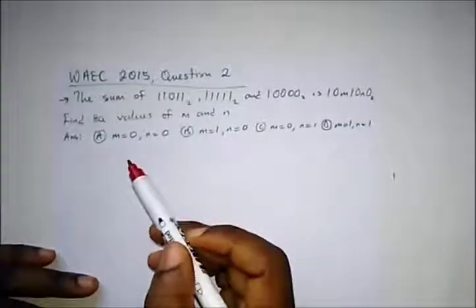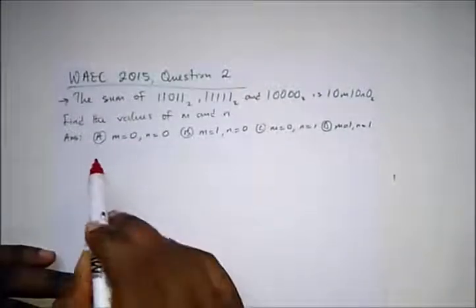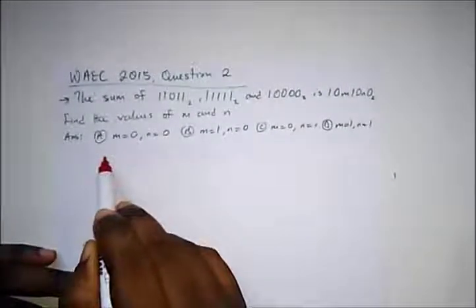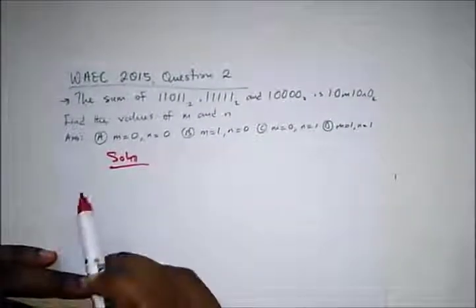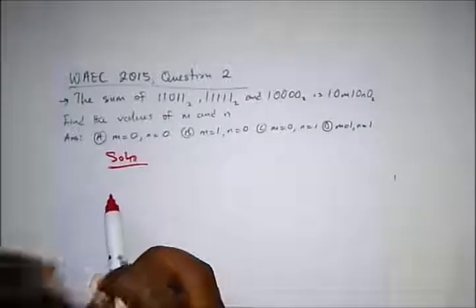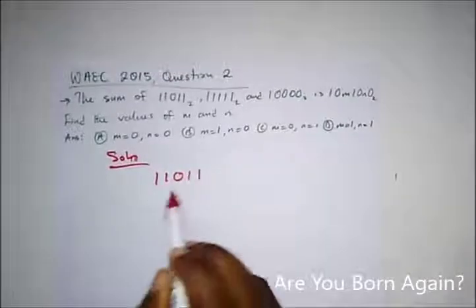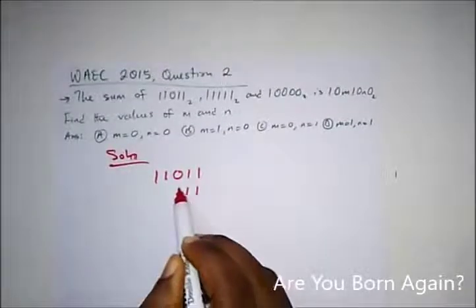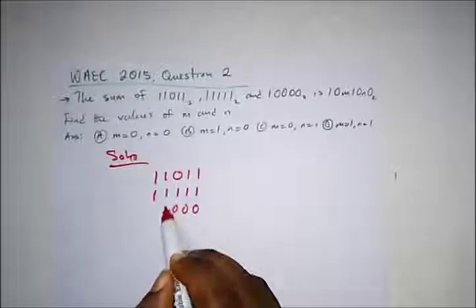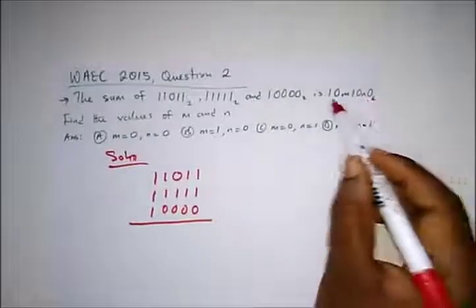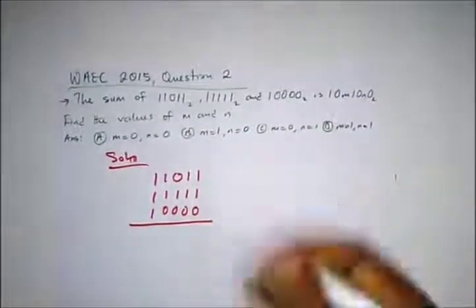Hello guys, welcome to Destined to Win Tutorials. Today we're going to be having some past questions from WAEC on number bases — that's the addition, subtraction, and multiplication of number bases. Here we have a question from WAEC 2015, question 2. It says: the sum of 11011 in base 2, 11111, and 00001 — find the values of M and N.